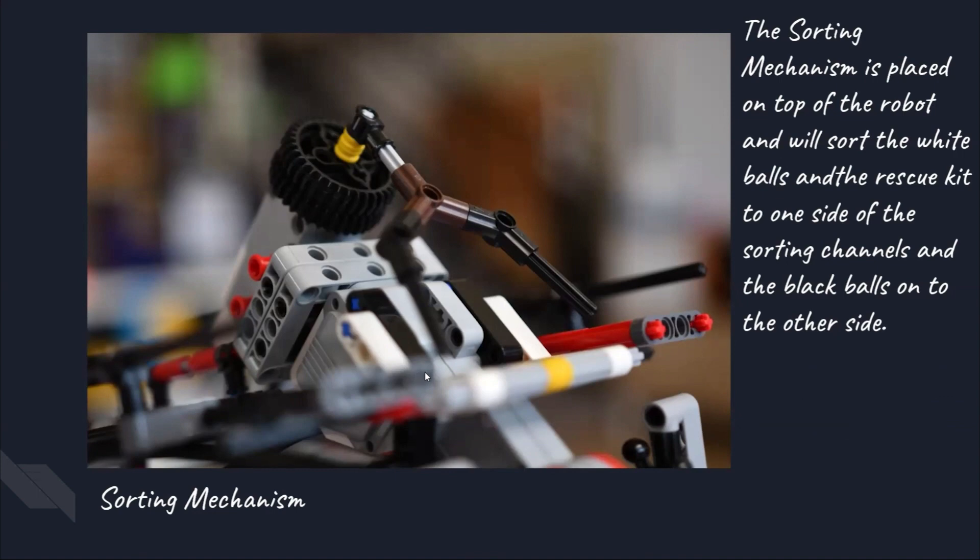The sorting mechanism placed on top of the robot will sort the white balls or the rescue kits to one side of the sorting channel, and the black balls onto the other side. This is so that we can first deposit the alive victims, then the dead victims, so that we can get the maximum points.